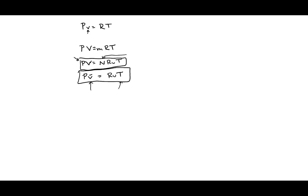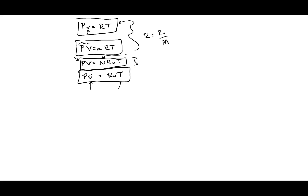If you're given pressure, volume, and mass and want temperature, use form 2. If you're given pressure and temperature and want specific volume, use form 1. Remember, for forms 1 and 2, R = Ru/M, while forms 3 and 4 use the universal gas constant. If unsure, write down the information you have, look at the different forms, and decide which is easiest to use.